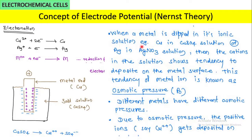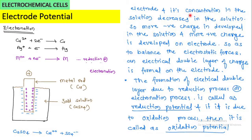When a metal is dipped in its ionic solution — for example, copper in copper sulfate solution or silver in silver nitrate solution — the cations in the solution show a tendency to deposit on the metal surface. This tendency of metal ions is known as osmotic pressure. Different metals have different osmotic pressure. Due to osmotic pressure, copper ions get deposited on the copper electrode, and the concentration of copper ions in the solution decreases. More negative charge develops in the solution and more positive charge develops on the electrode.